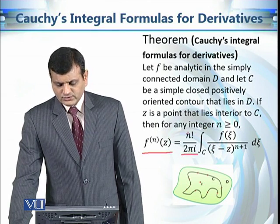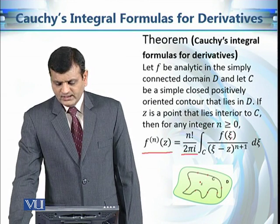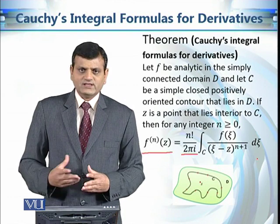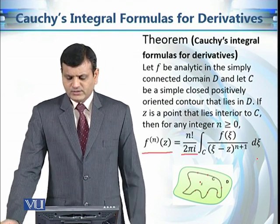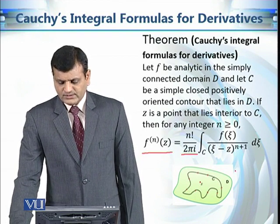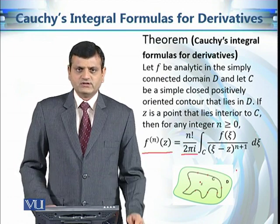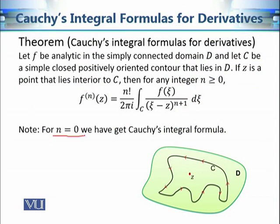You can see some differences: where it was 1 before, now it is n factorial, and the integrand is f(ξ)/(ξ − z)^(n+1) dξ. We use the dummy variable ξ inside the contour integral to distinguish it from z, which lies inside the contour C. If we take n = 0, this reduces to Cauchy's integral formula: f⁽⁰⁾(z) is just f(z), 0! = 1, and the denominator becomes ξ − z — consistent with the original formula using z₀.